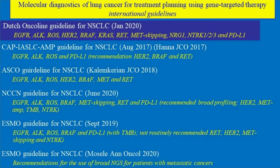This is a list of 13 genes in the Netherlands Dutch guidelines, updated in January last year. Looking abroad at other guidelines — the CAP, the ESMO, etc. — you can recognize there is a similarity. Most guidelines now recommend testing not just EGFR and ALK, but a broader panel. So in other countries it is similar.